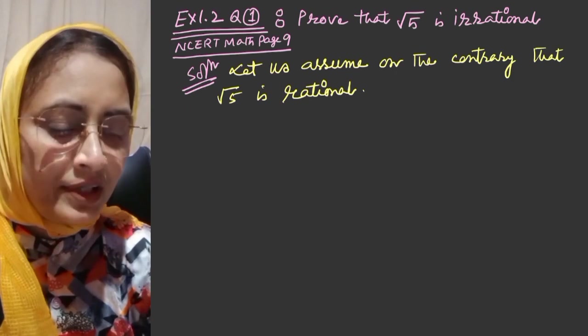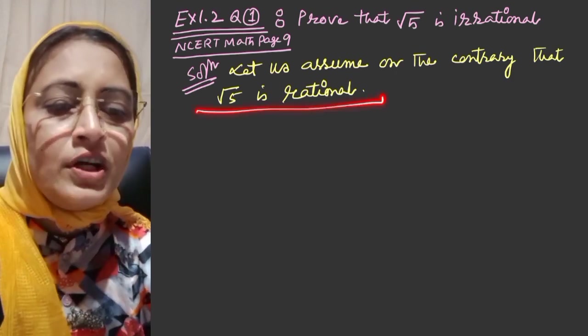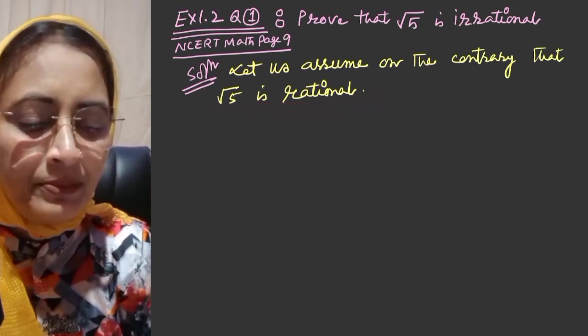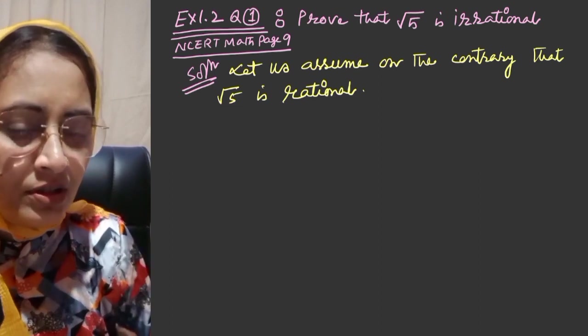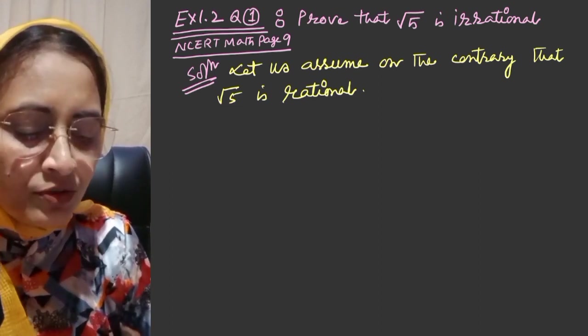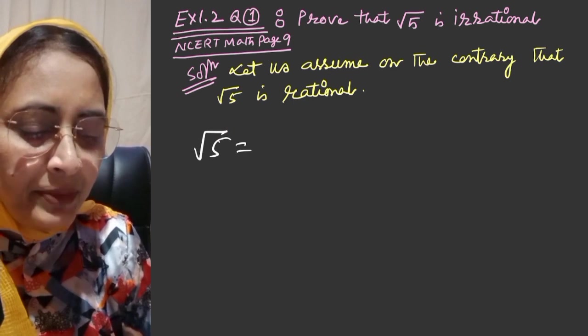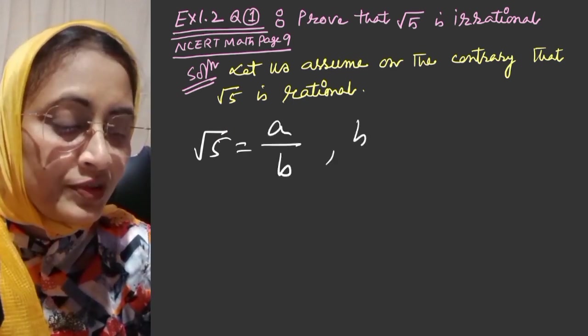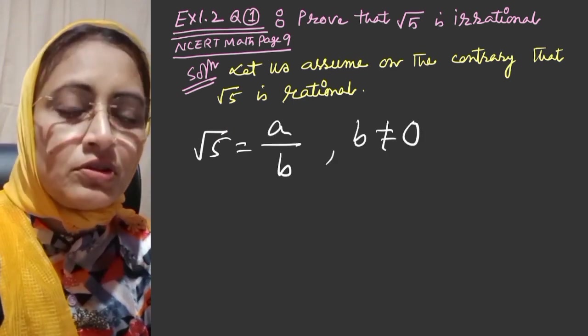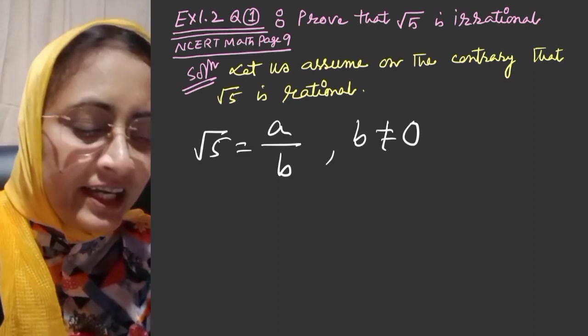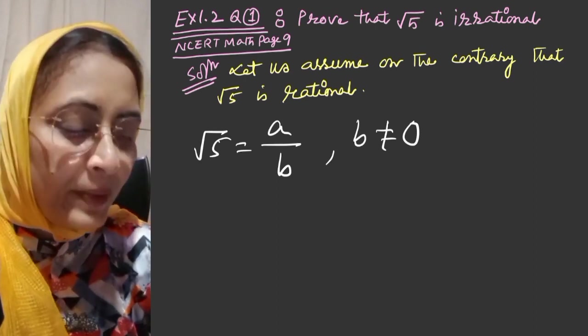Now, assume root 5 is rational. Then we can write root 5 is equal to a by b, where b is not equal to zero. Also, a and b must be coprime.